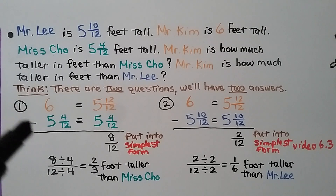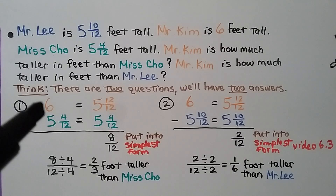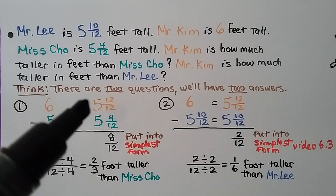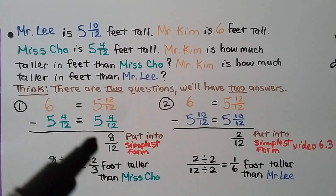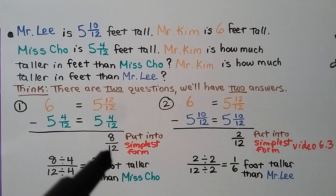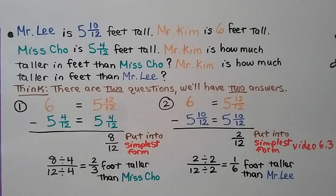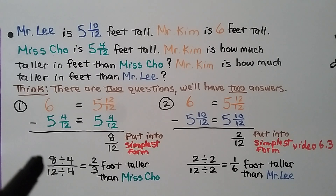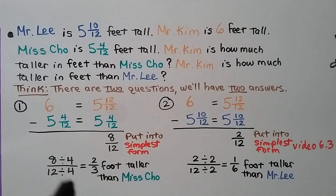Mr. Kim is 6 feet tall. Ms. Cho is 5 and 4 twelfths feet tall. We can rewrite this 6 as a 5 and 12 twelfths. Now we can subtract 5 and 4 twelfths: 12 minus 4 is 8. We put it over the like denominator 12, giving us 8 twelfths. We put it into simplest form by dividing both 8 and 12 by the greatest common factor, which is 4. 8 divided by 4 is 2, and 12 divided by 4 is 3. We know Mr. Kim is 2 thirds of a foot taller than Ms. Cho.